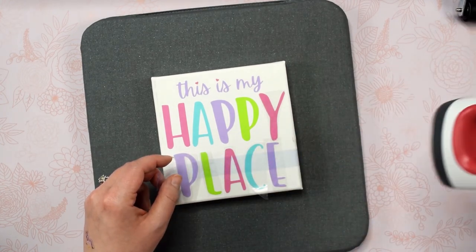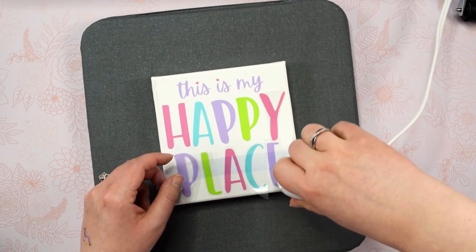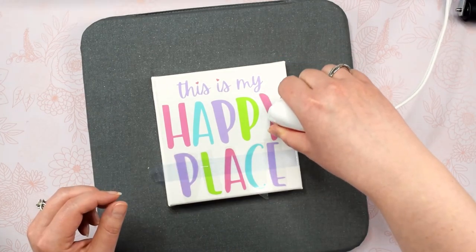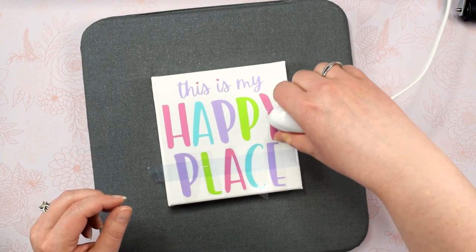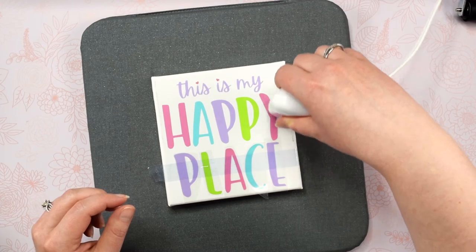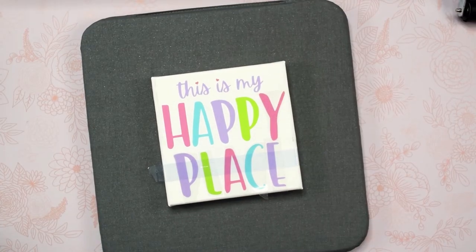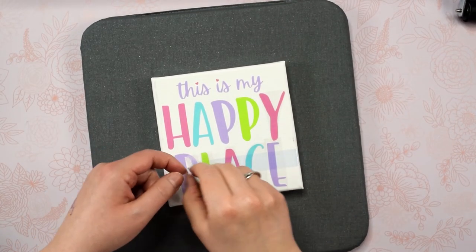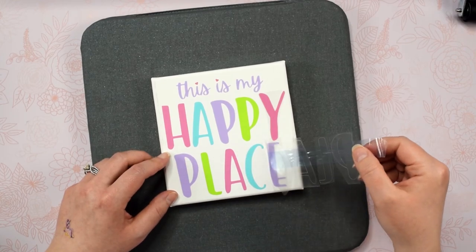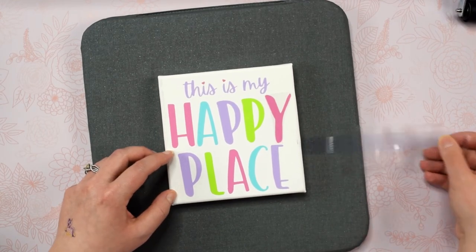The type of vinyl you purchase will specify if it's warm peel or cool peel heat transfer vinyl. Once you start to peel the plastic sheet away, if you notice any parts of the design not adhering, just place the plastic sheet back down and go over that spot again until it sticks.